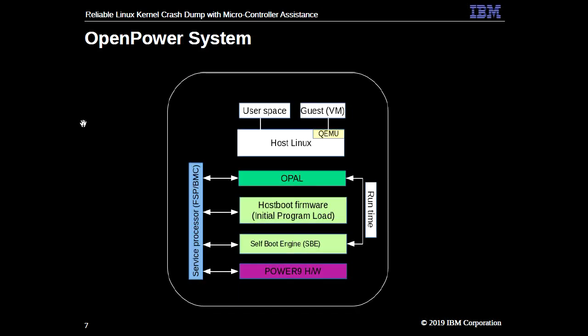This is a very high-level view of how the OpenPower system looks and the boot process. On the left-hand side we have the service processor, which helps us manage the systems - power on, power off, get the console. Moving from bottom to top, we have the Power9 hardware. Once you power on the system, control comes to the self-boot engine, which runs small microcode and loads part of the hostboot firmware to the cache of one of the cores, and gives control to the hostboot firmware. Hostboot does various initializations - initializing the rest of the cores, initializing memory, running various diagnostics - and then it essentially vanishes after boot.